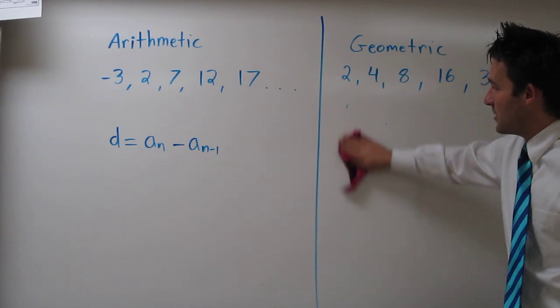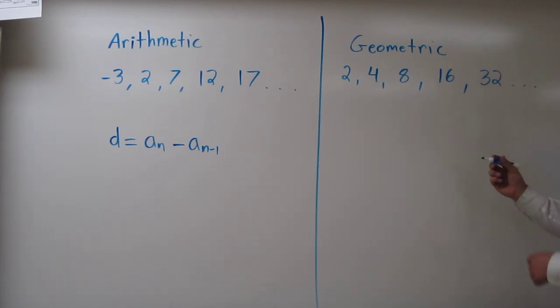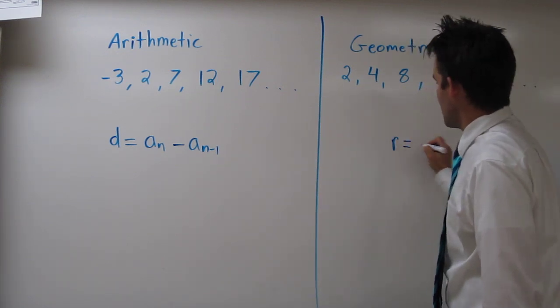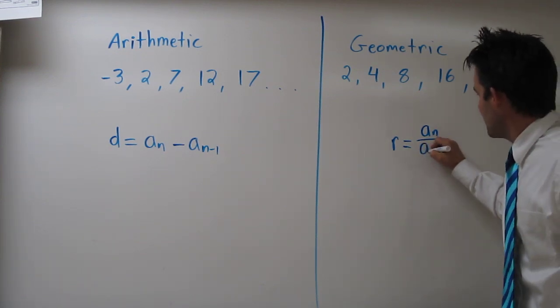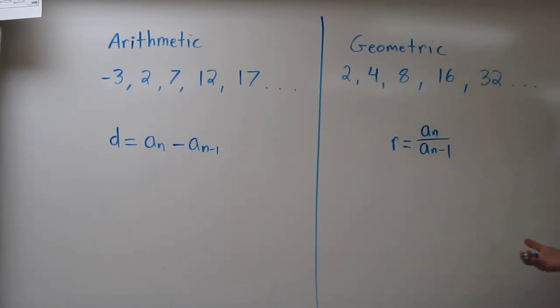We call this common ratio r. And we can find r by taking any term, so we'll say a sub n, and dividing it by a sub n minus 1.